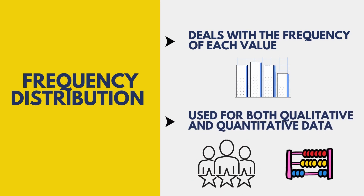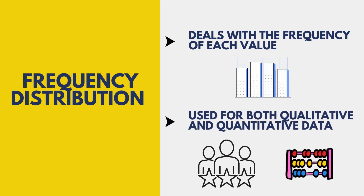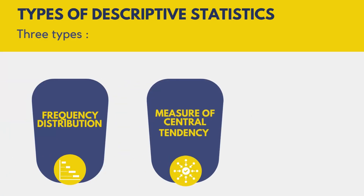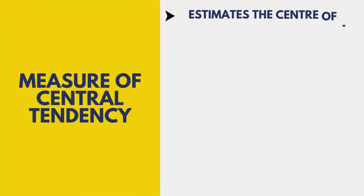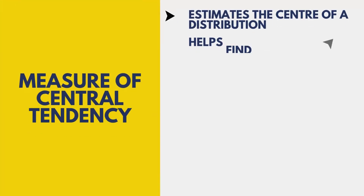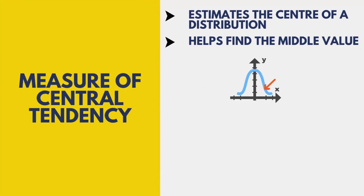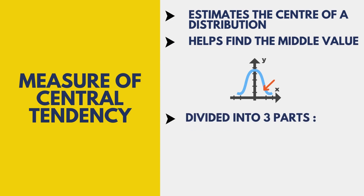Frequency distribution can be used for both quantitative and qualitative data. Moving on to the second type: the measure of central tendency. It estimates the center of a distribution and helps find the middle value or average of the values. It can be further divided into three parts: mean, median, and mode.